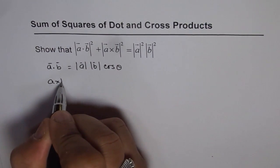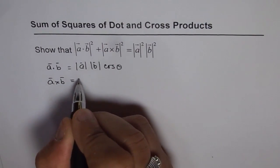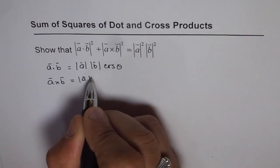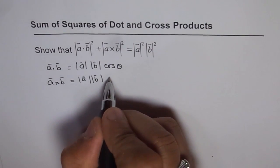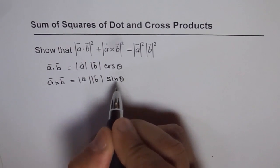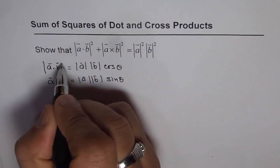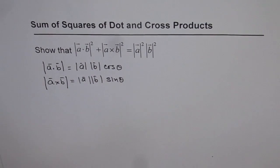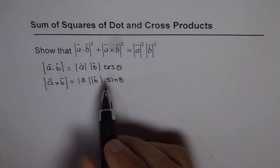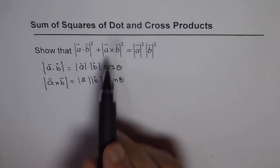And what is A cross B? Now A cross B is the magnitude of A, magnitude of B times sine of angle between them. So we are actually talking about their magnitudes at present. This is a vector quantity which will be normal to this. That is the magnitude. So these are the magnitudes of A dot B and A cross B.